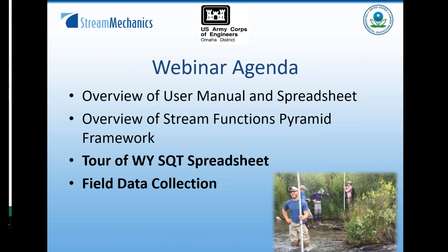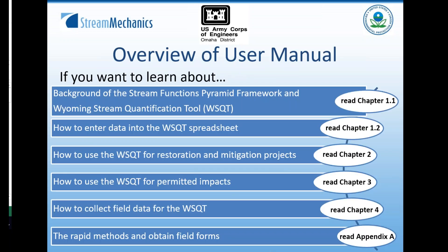Today we are going to provide a very brief overview of what's in the user manual and the spreadsheet tool. Will is going to provide an overview of the Stream Functions Pyramid Framework as background, and then also provide a tour of the Wyoming Stream Quantification Tool spreadsheet. We will also touch on some key points for field data collection to inform the tool. The tool does many things, and depending on your intended use, certain aspects of the user manual may be very relevant to you and others may be less relevant.